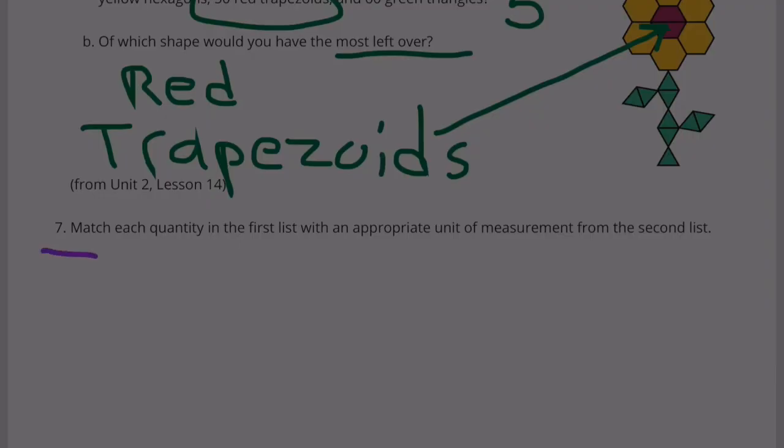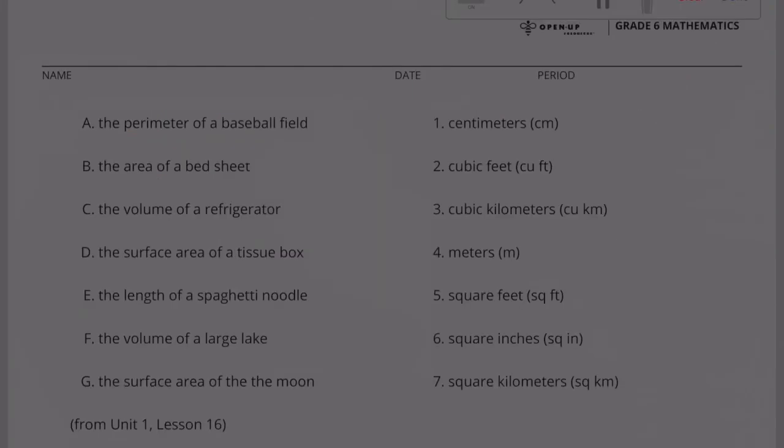Number 7: Match each quantity in the first list with an appropriate unit of measurement from the second list. Part A: The perimeter of a baseball field. So they're asking for the perimeter, so that's actually like the length or a distance. So it's not going to be anything that's squared or cubed. Cubed is going to represent volume, and squared is going to represent area. So right now we have to decide: is the perimeter of the baseball field better measured by these little centimeters or these larger meters? And of course, I'm going to say the larger meters. So A would be 4. The perimeter of a baseball field would be measured in meters.